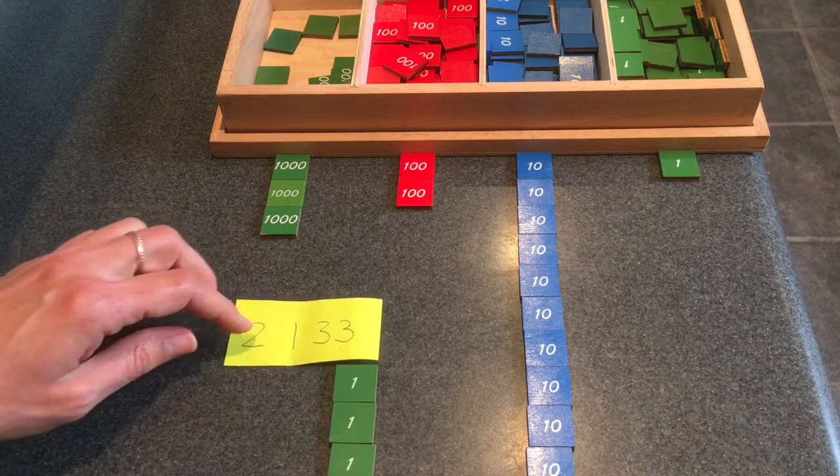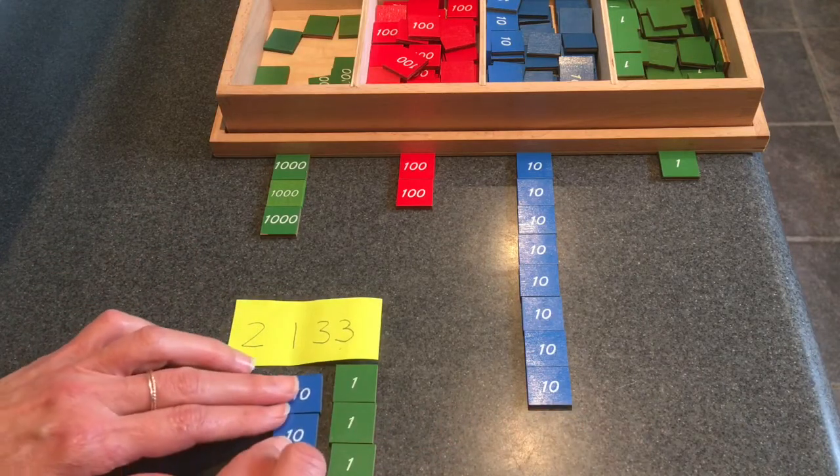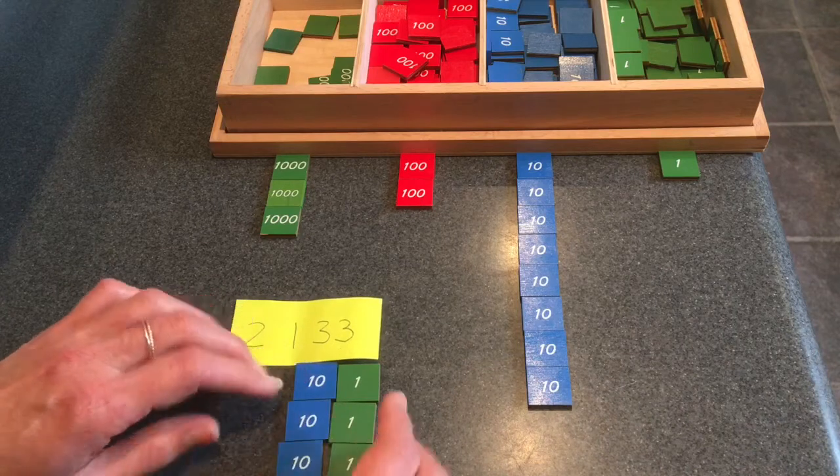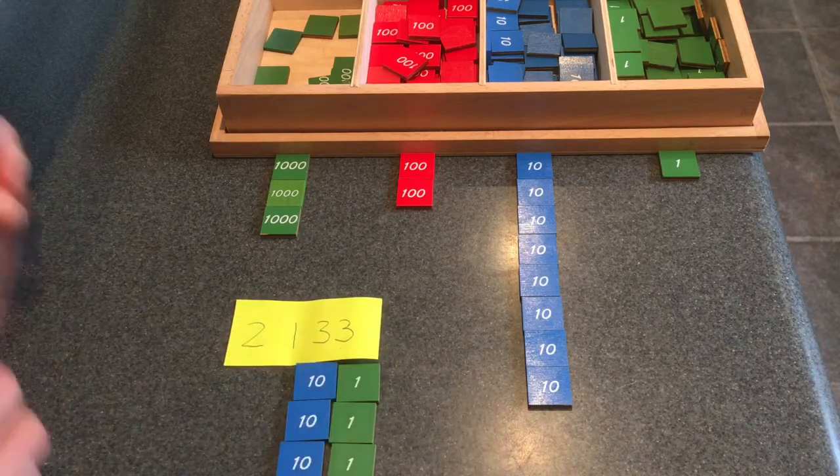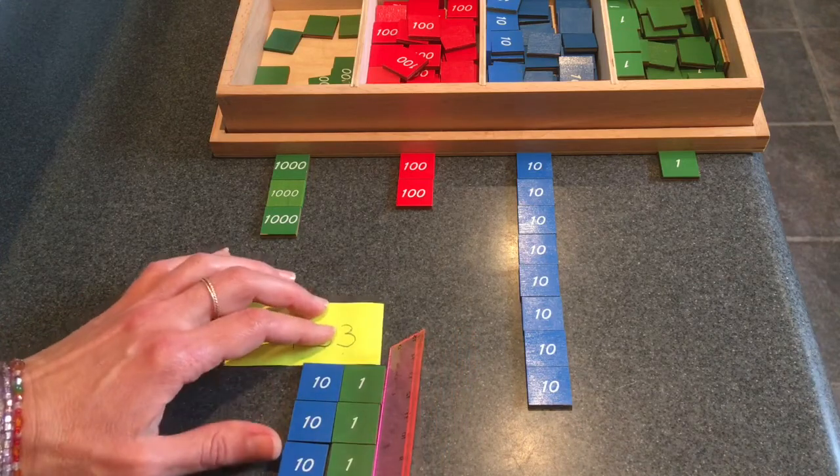You can take away three, one, two, three, and build them right over here under this three. Oh, I'll use my ruler to straighten this. That's when the ruler comes in handy, huh? Okay.